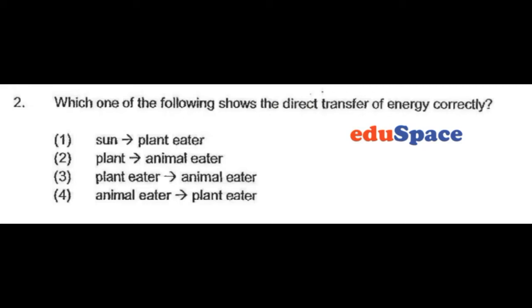Which one of the following shows the direct transfer of energy correctly? In this case, if we take a look at option one, sun provides a plant eater with energy. That is not true. The sun provides the plants with energy when the plant photosynthesizes, so not directly to the plant eater.